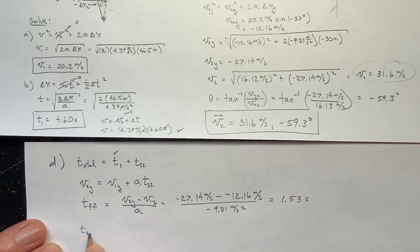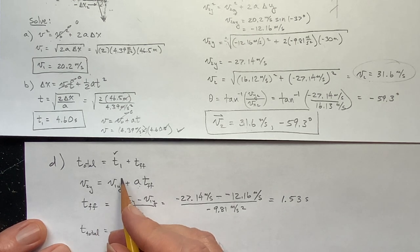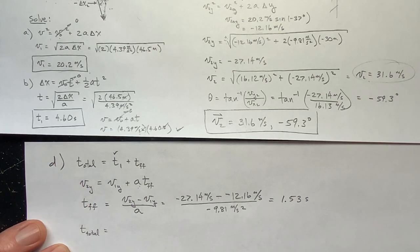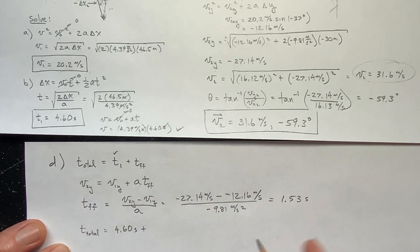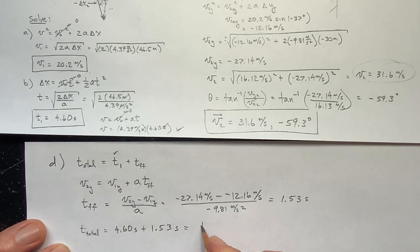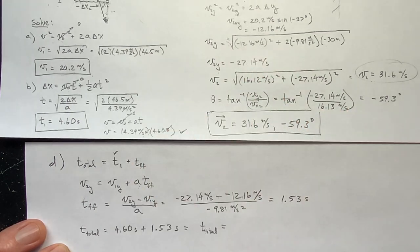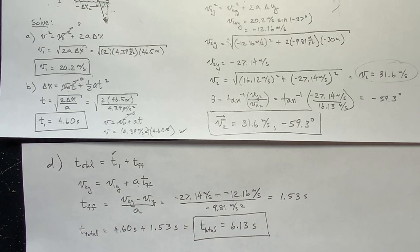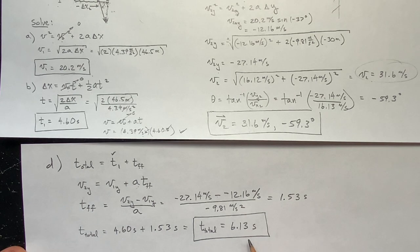So the total time is t_total = t₁ + t_freefall = 4.60 + 1.53 = 6.13 seconds. That's the total time from when the car started rolling at the top of the ramp to when it hit the water.